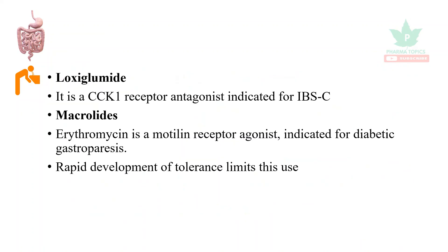Loxoglumide is a cholecystokinin-1 receptor antagonist indicated for constipation-predominant irritable bowel syndrome. Macrolides also have prokinetic action: erythromycin is a motilin receptor agonist indicated for diabetic gastroparesis, but rapid tolerance development limits its use.